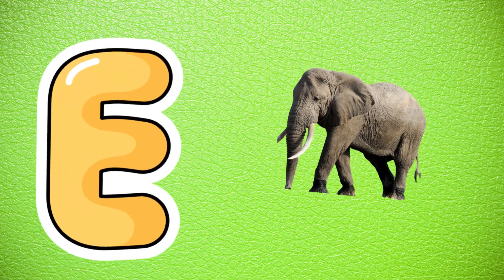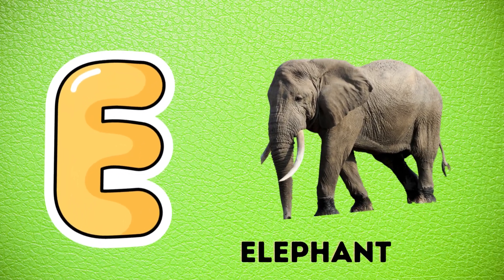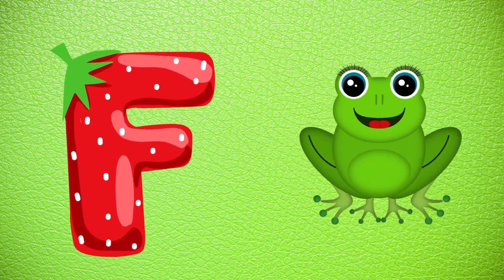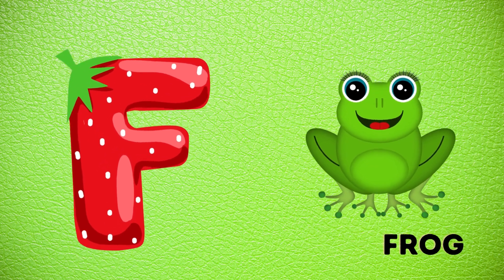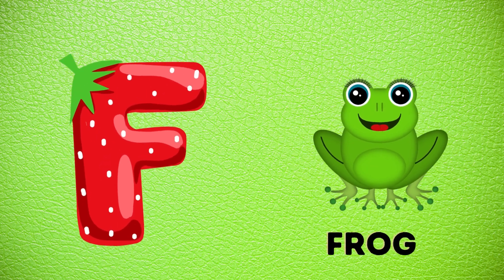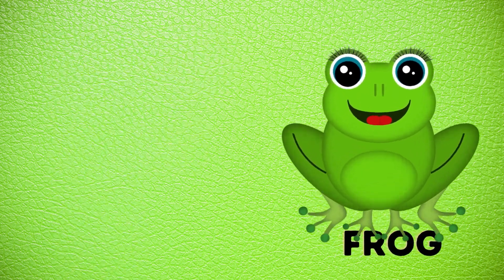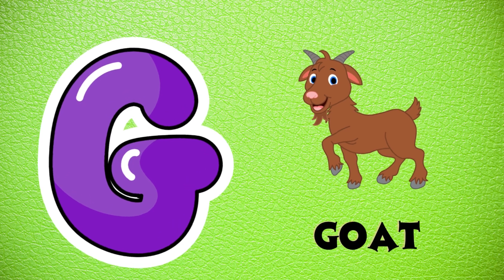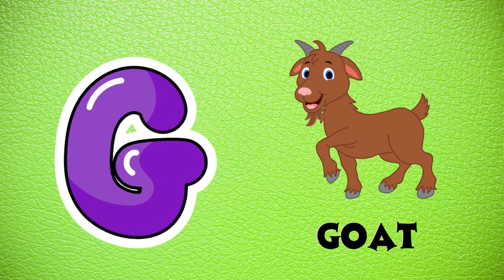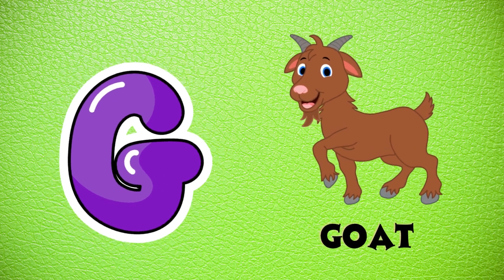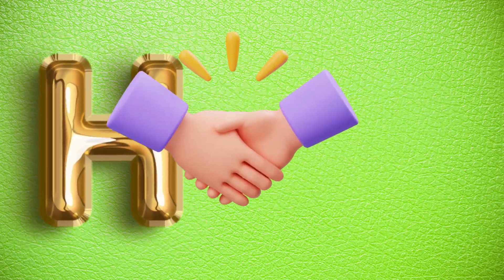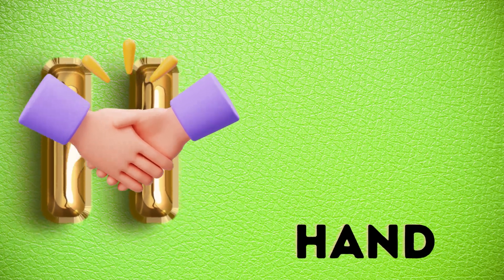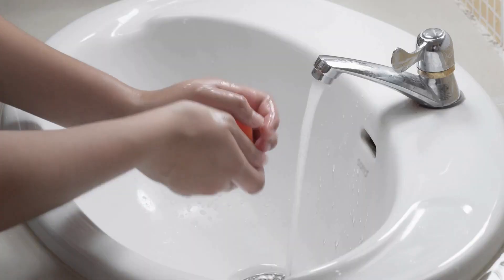E is for elephant, e-e-elephant. F is for frog, f-f-frog. G is for goat, g-g-goat. H is for hand, h-h-hand.